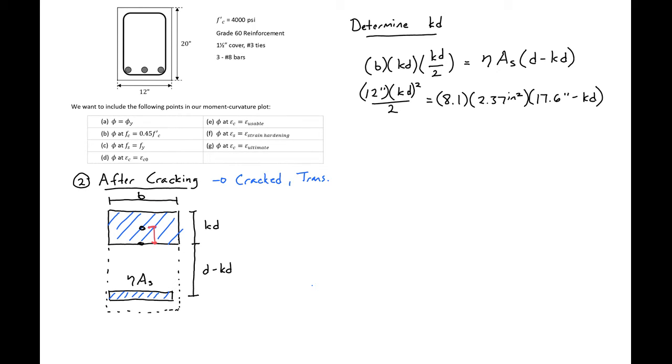We can rearrange this and simplify it for a quadratic. We'll get 6 kd squared plus 19.2 kd minus 338 equals 0. This is a quadratic and we can use the quadratic formula. We'll solve for kd and find kd equal to 6.08 inches.